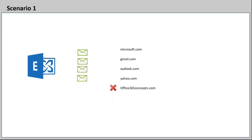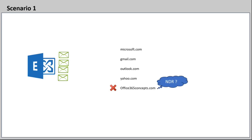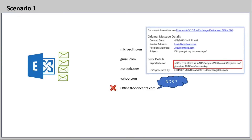Let's say users are able to receive emails from all external domains except one. If users are not able to receive emails from a particular domain, ask the sender whether they are receiving an NDR while sending emails to you. NDR is basically a non-delivery report — an email sent to the sender that includes a detailed error report when an email is not delivered to the recipient. NDR or non-delivery report is also called a bounce-back message.